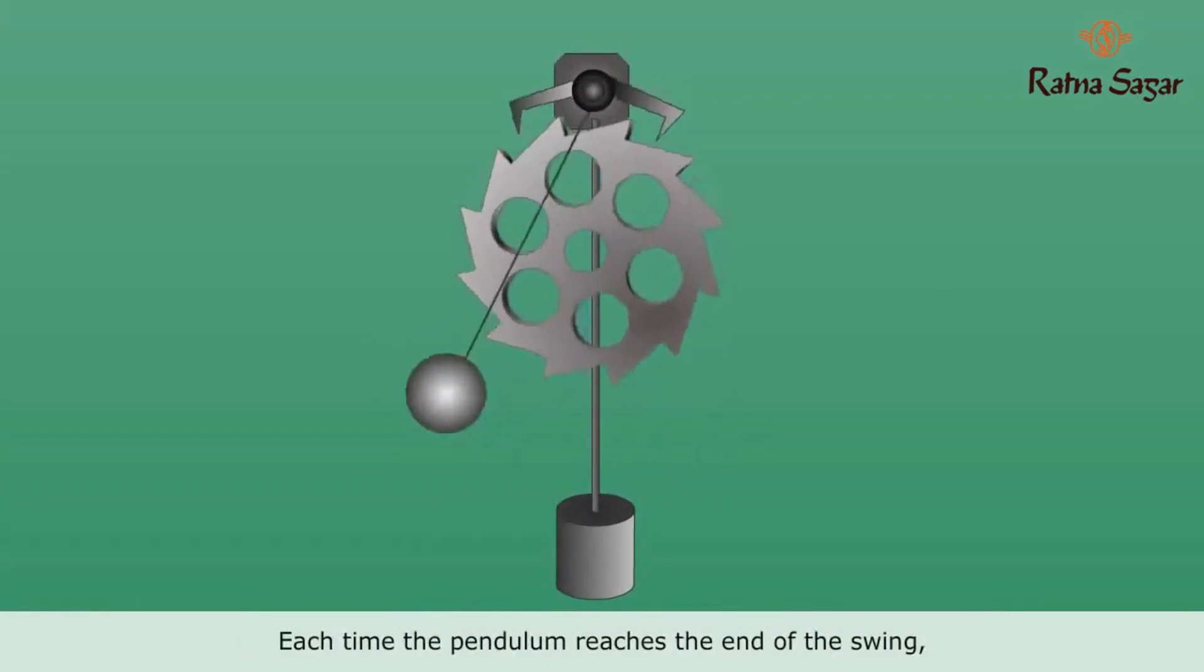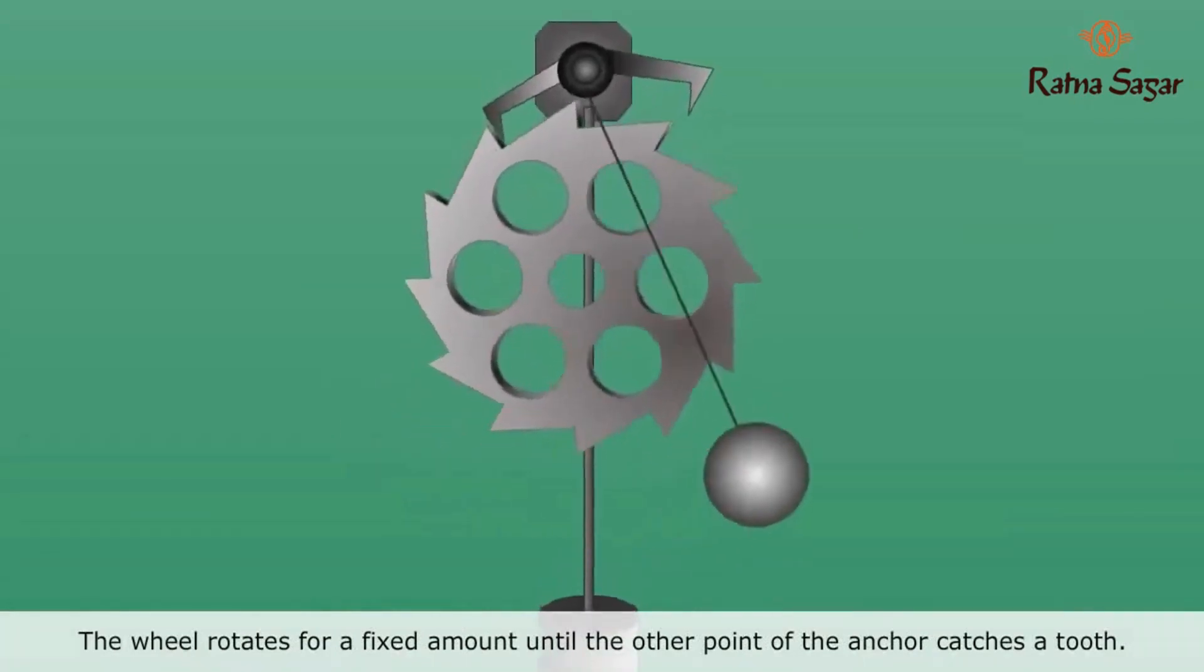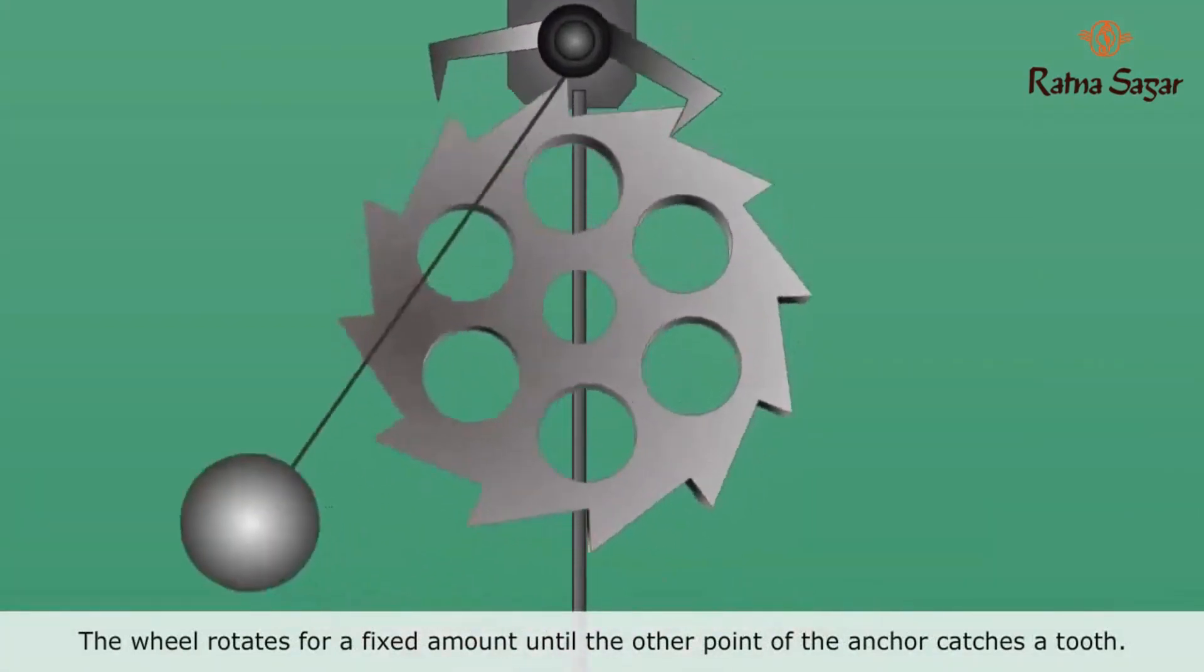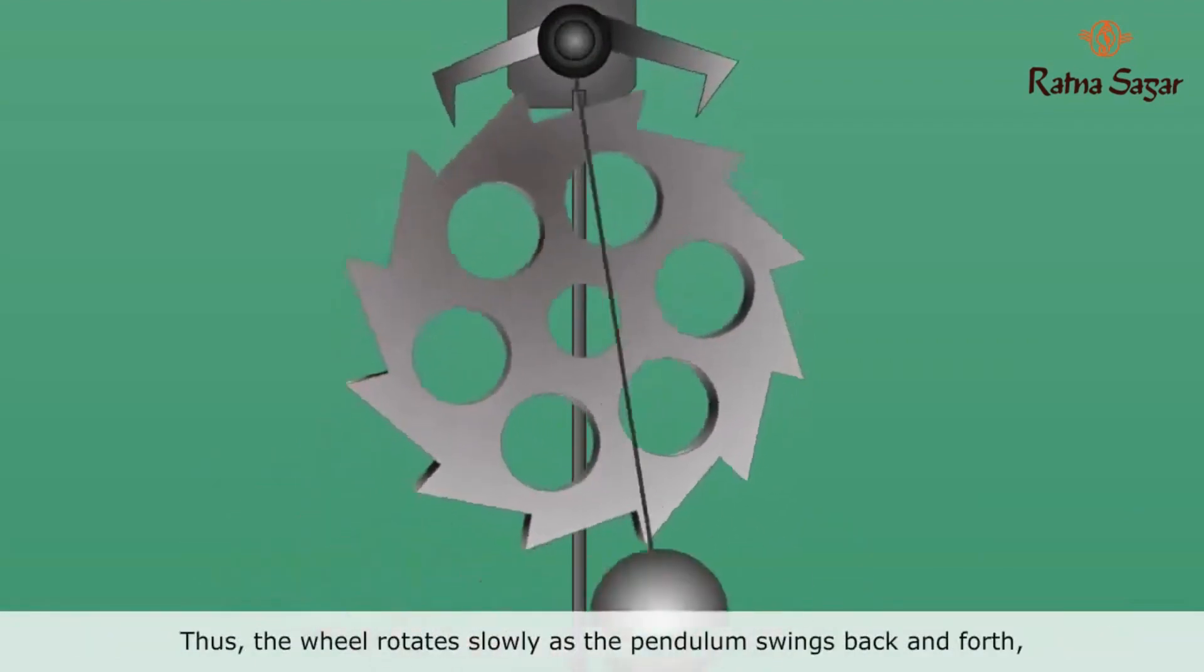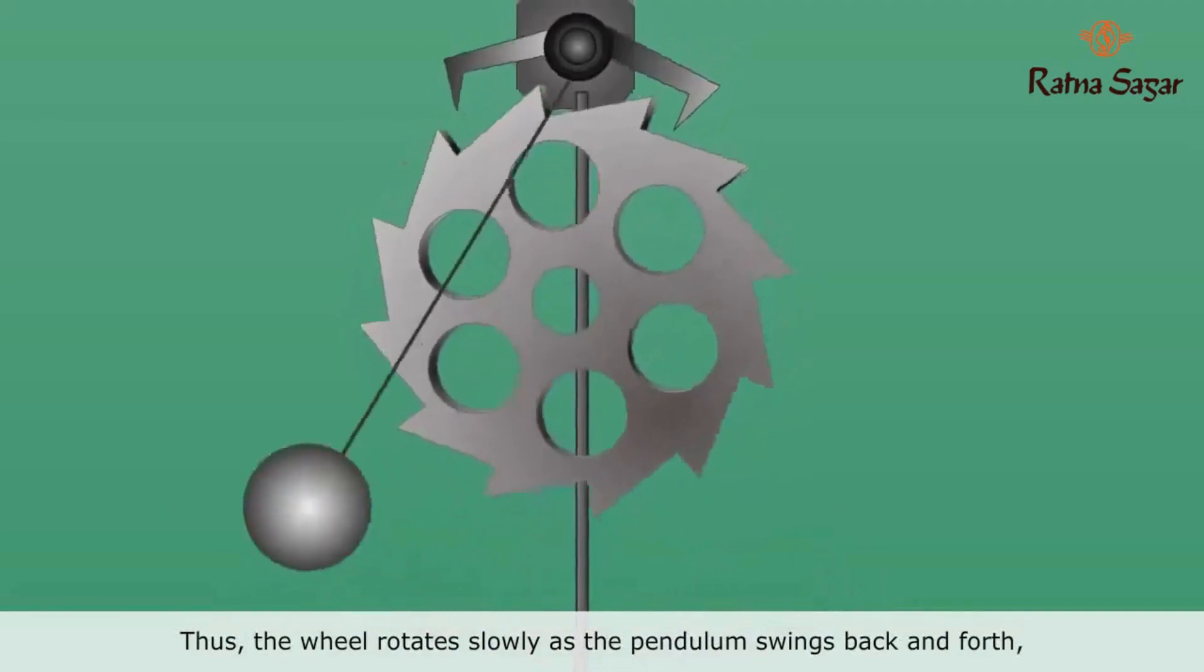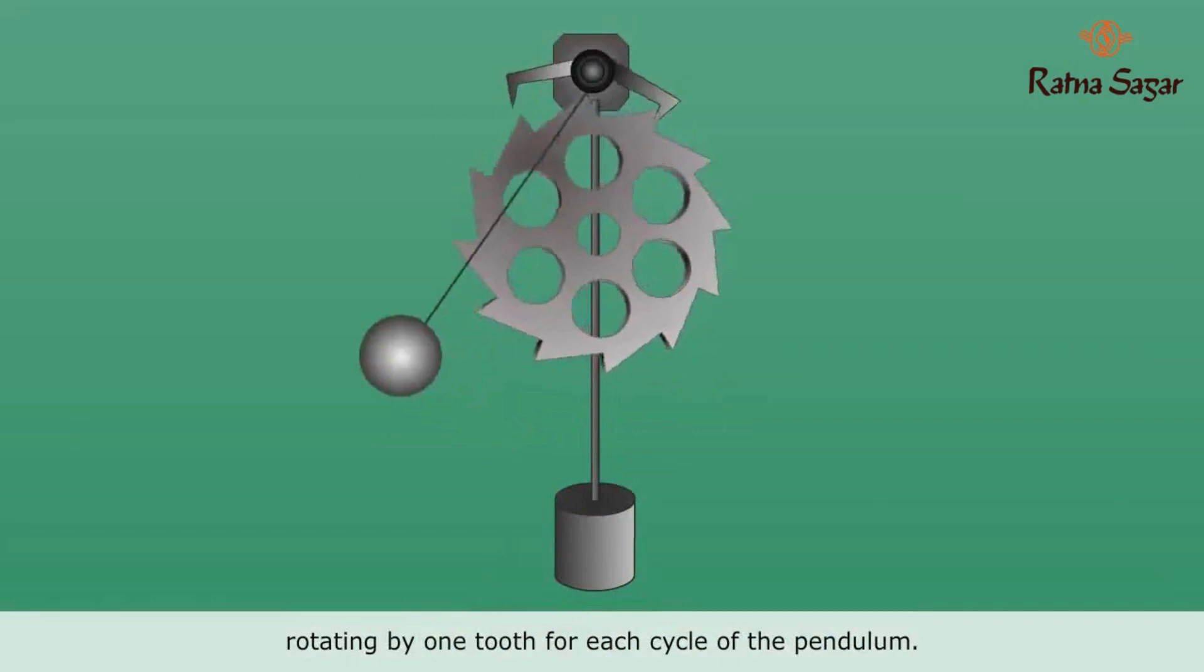Each time the pendulum reaches the end of the swing, one point of an anchor releases a tooth of the escape wheel. The wheel rotates for a fixed amount until the other point of the anchor catches a tooth. Thus, the wheel rotates slowly as the pendulum swings back and forth, rotating by one tooth for each cycle of the pendulum.